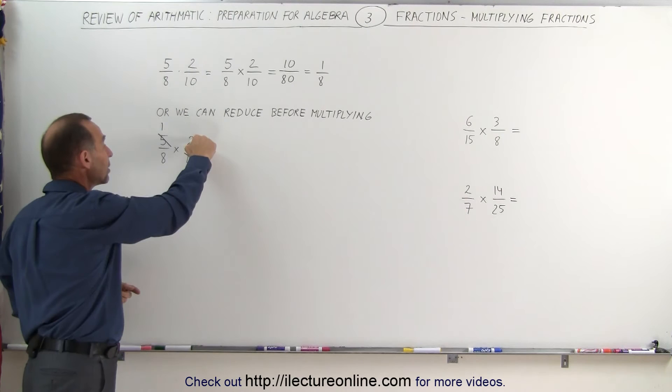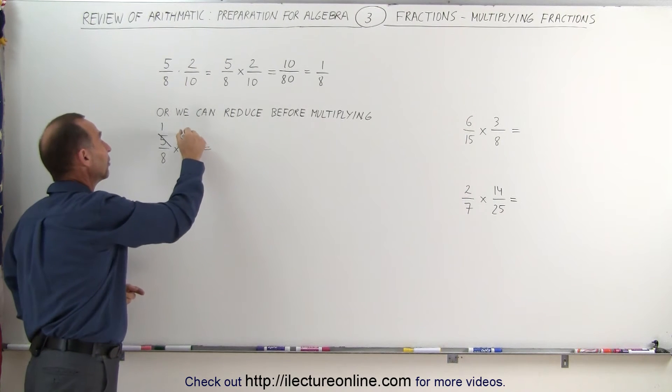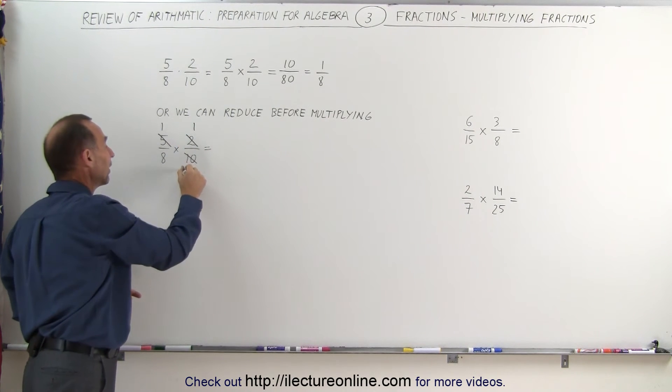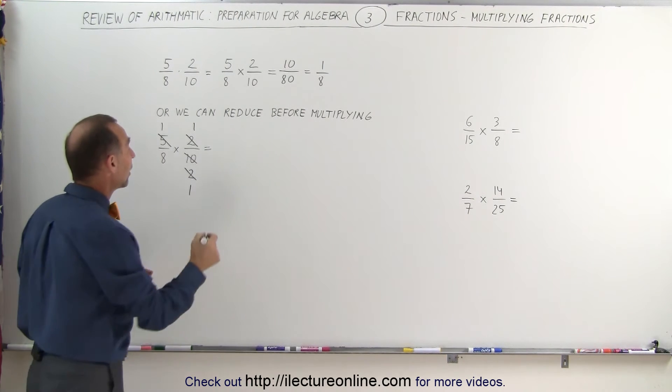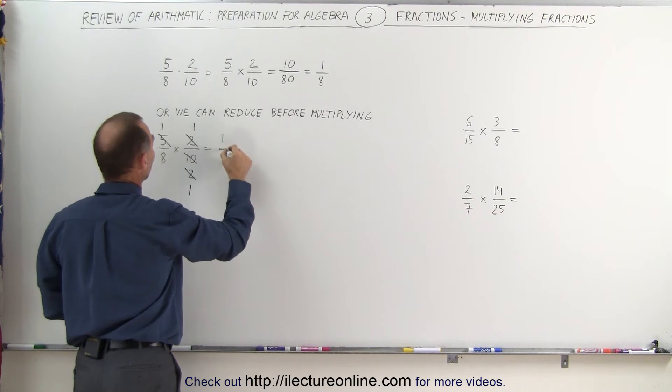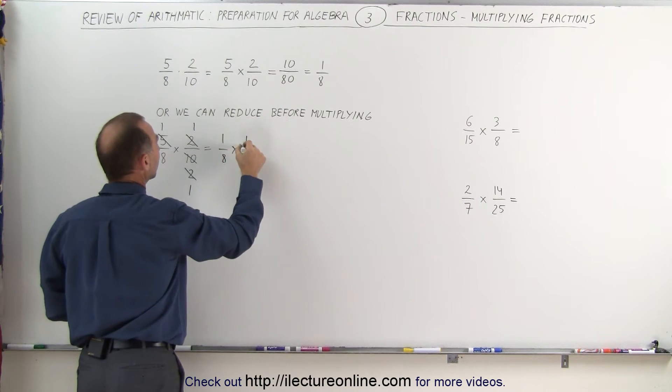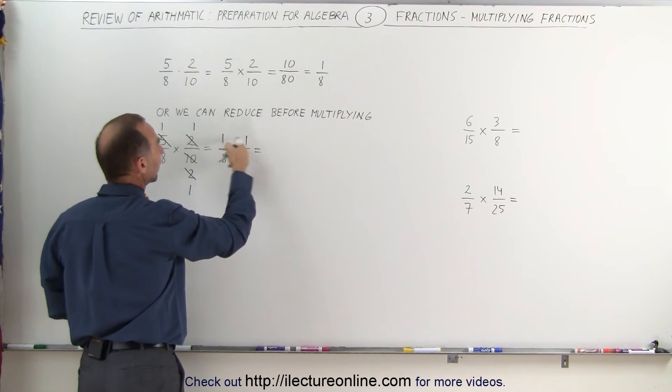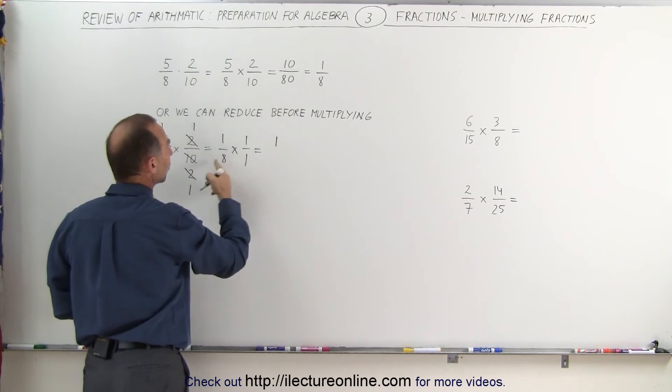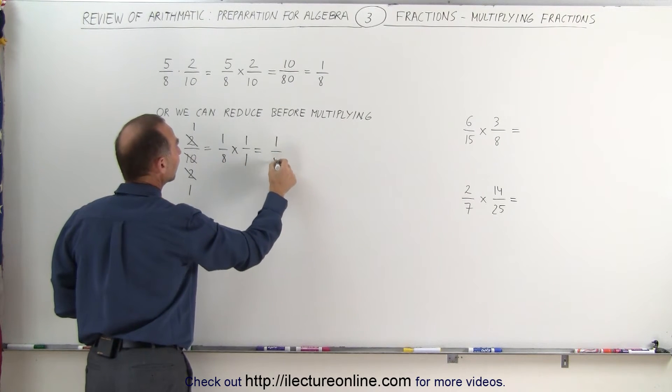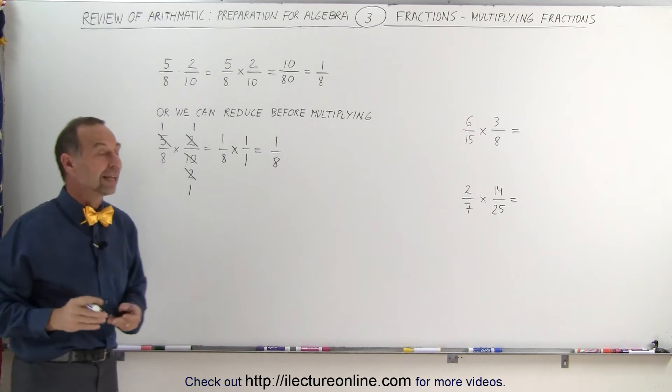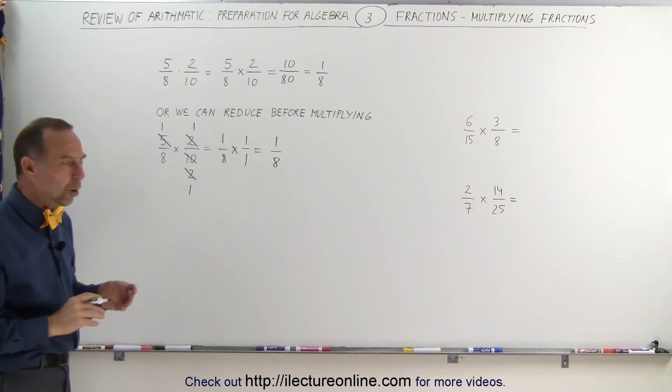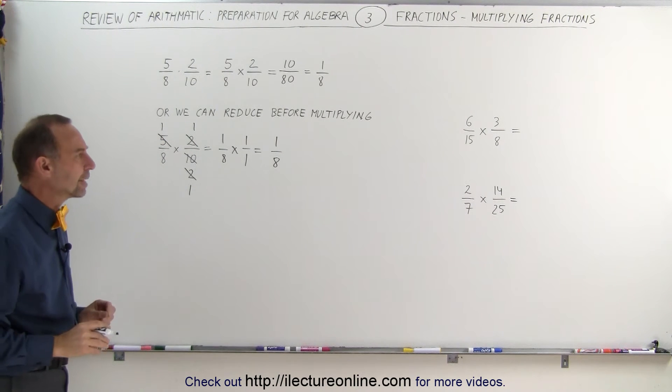In addition to that, we see a 2 here, we see a 2 there. We can divide this 2 by 2, we get a 1. We can divide this 2 by 2 and we get a 1. And all we have left now is 1 over 8 times 1 over 1. Now we multiply the numerators together, we get 1. Multiply the denominators together, we get 8. And the answer again, of course, is 1/8. If we did it correctly, we should get the same answer. So always try to reduce the fractions when you can.